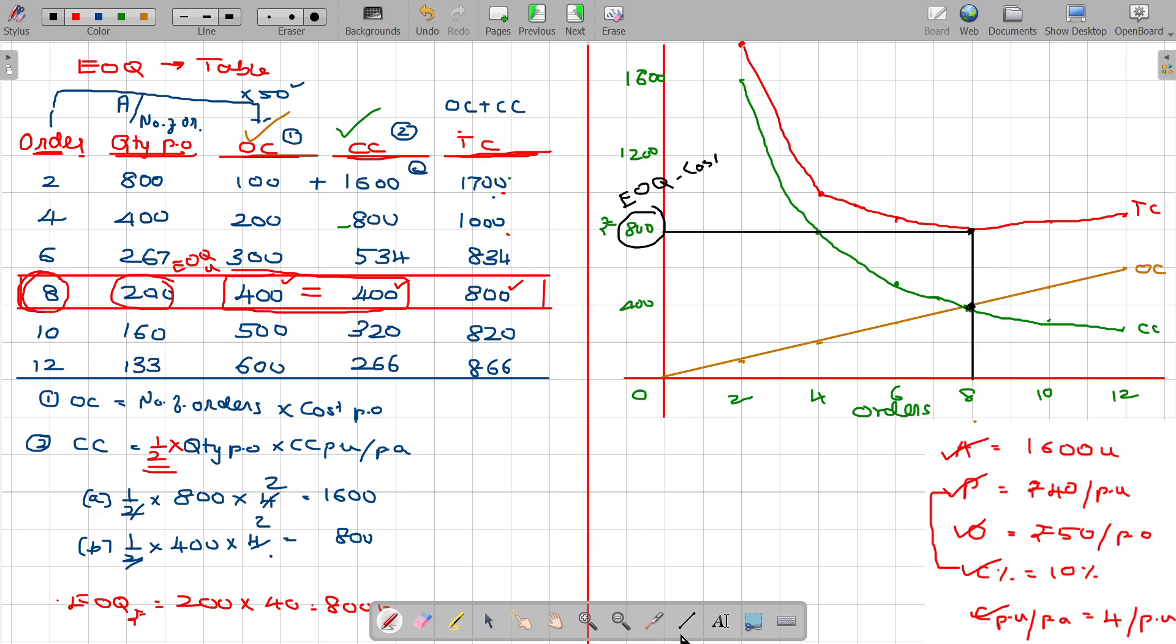And that is about ordering cost and carrying cost. At this point, ordering cost and carrying cost are equal. Here this 8 you know is the number of orders. Is that clear?